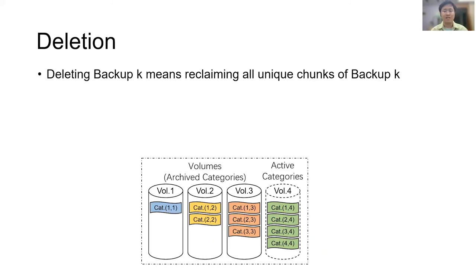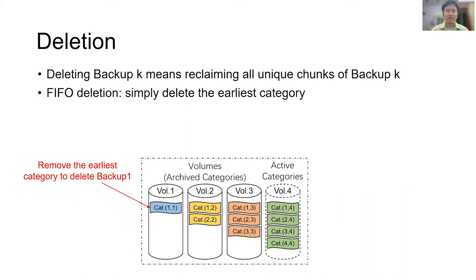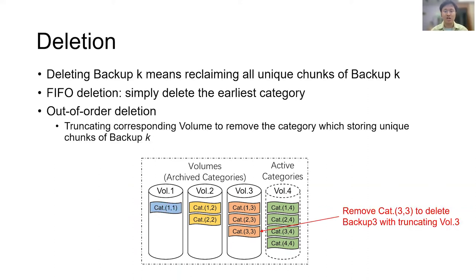Our data layout also benefits deletion. We support both FIFO deletion and out-of-order deletion. Deleting backup K means reclaiming all unique chunks of backup K. From the name of categories, we learn that unique chunks of each backup separately compose cat11, cat22, cat33, and cat44. Thus, for FIFO deletion, we can simply delete the earliest category to delete the earliest backup, like this way. For out-of-order deletion, we can truncate corresponding volumes to remove the involved categories. For example, backup 3 could be deleted by truncating volume 3 and removing cat33 in this way. Thus, previous mark-sweep style garbage collection is no longer required.